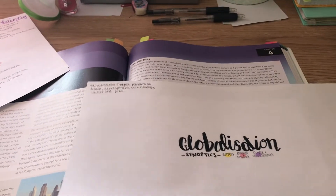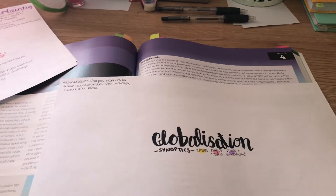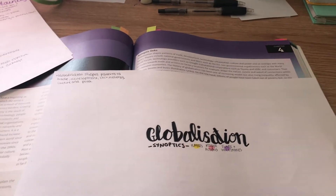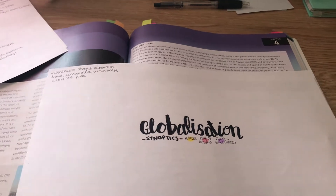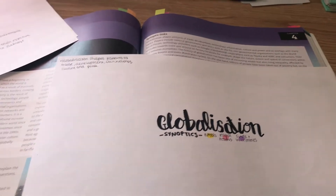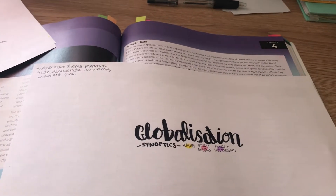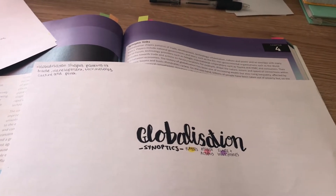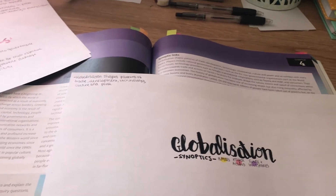I need to get this done today, so I'm gonna make these mind maps for everything of the synoptic topics — which is tectonics, globalization, water, carbon, and superpowers. I've got four to do, which is alright.